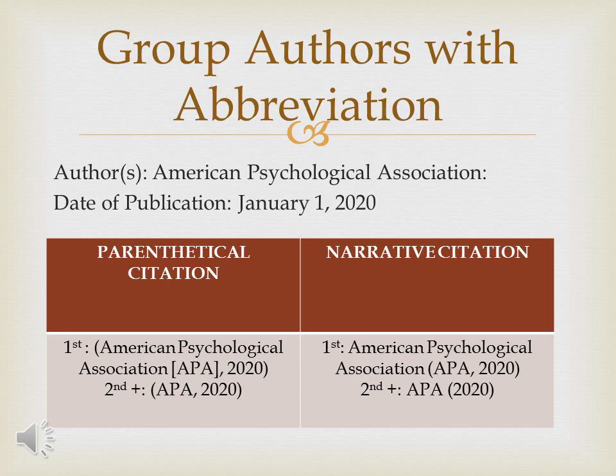Next, we have group authors with abbreviation. For example, American Psychological Association, date of publication January 1, 2020. We also have parenthetical and narrative citation. In the first citation — the first time you cite this in your academic paper — it should look like this: open and close parenthesis, American Psychological Association, square bracket, the abbreviation APA, comma, then date of publication 2020.